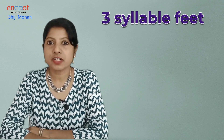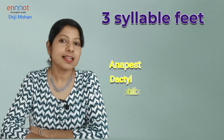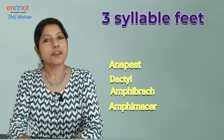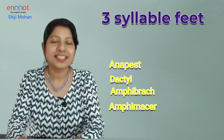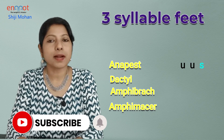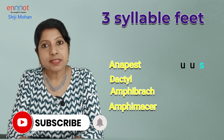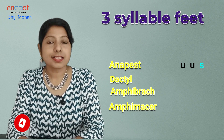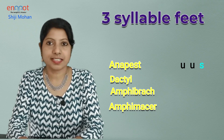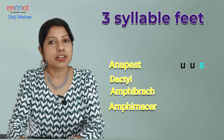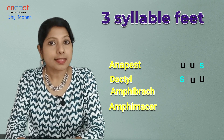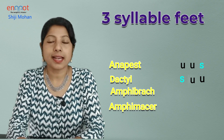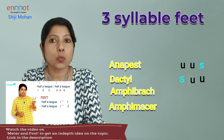Now let's have a look at the trisyllabic metrical feet. We have anapest, dactyl, amphibrach, and amphimacer. Anapest is a foot in which two unstressed syllables are followed by a stressed syllable. Dactyl is the reverse of anapest — an accented syllable followed by two unaccented or weak syllables.